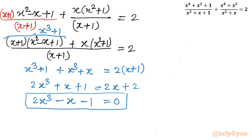So the equation reduces to the cubic polynomial 2x³ − x − 1 = 0. We need to find one root. By the rational root theorem or simply adding all coefficients: 2 + 0 − 1 − 1 = 0. So putting x = 1 gives 0, confirming x = 1 is a root.